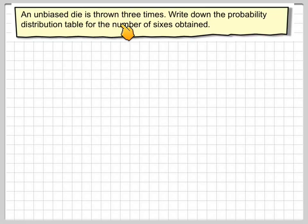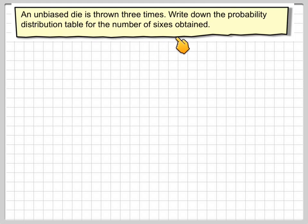An unbiased die is thrown three times. Write down the probability distribution table for the number of sixes obtained.